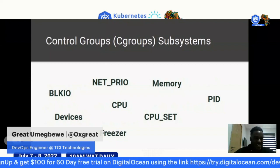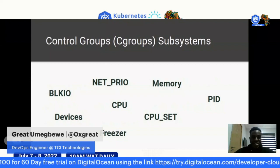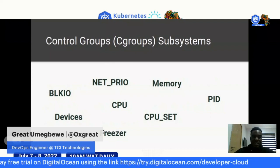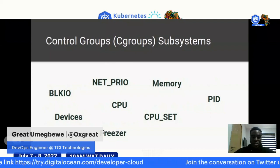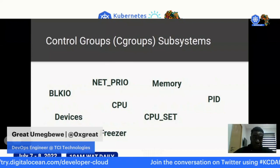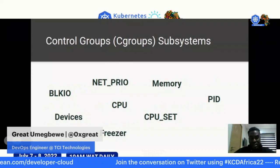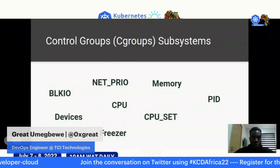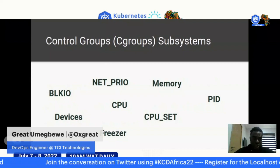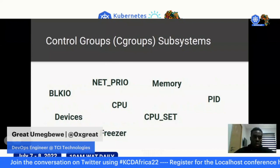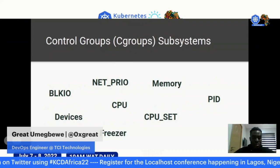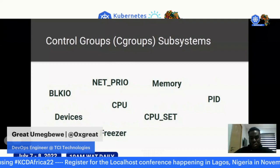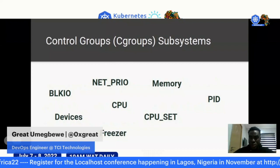We also have the IPC namespace — inter-process communication. It was recently added to the Linux kernel to isolate inter-process communications.